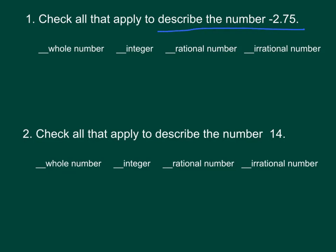Describe the number negative 2.75. Well, the giveaway here is this part right here, the .75. That tells us it's a rational number because it has a decimal part to it. It is not an integer because it has the decimal part. It is not a whole number. So that's all it is.